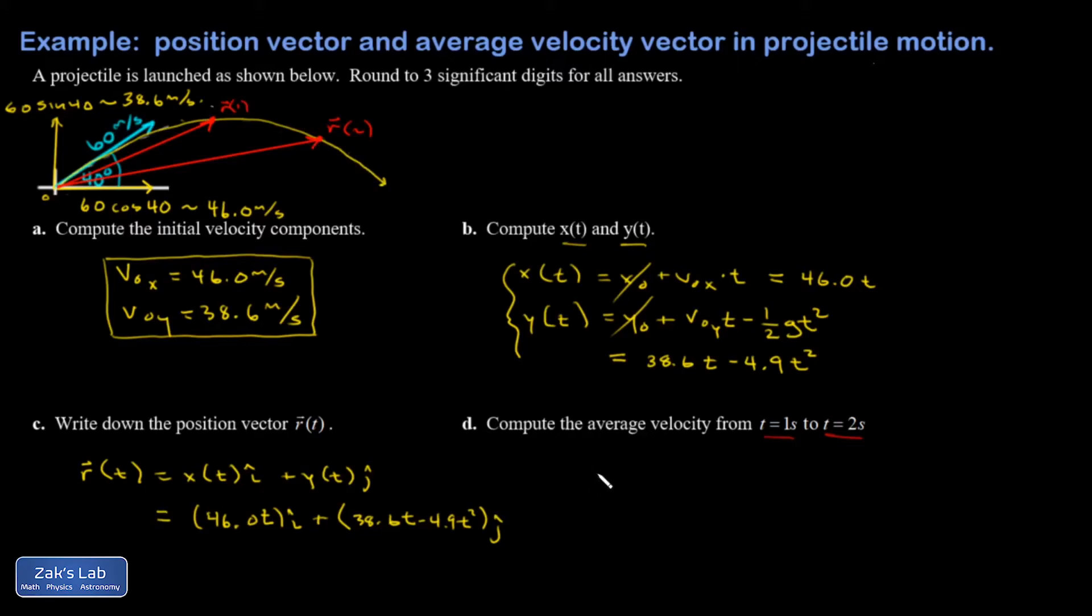So that describes this rotating and lengthening vector that's pointing to the position of the object at every moment in time. All right, finally I want to get the average velocity. And the average velocity vector is going to be a change in the position vector divided by how much time has gone by.